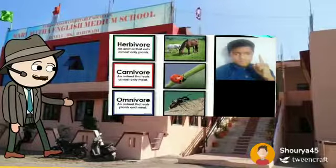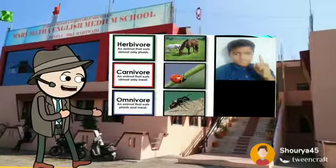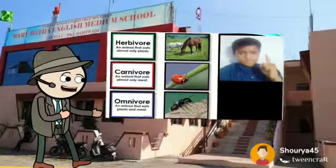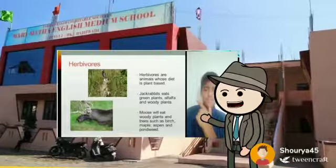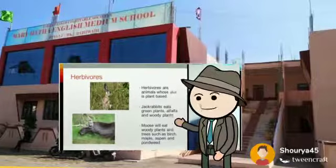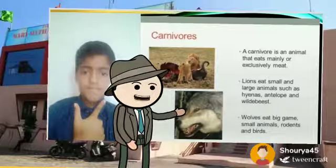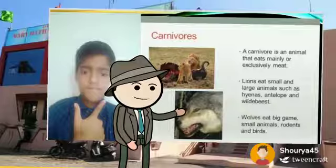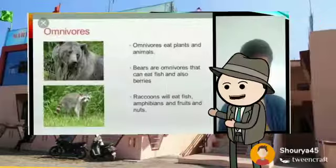Animals are divided into three types based on their eating habits. These three types are herbivore, carnivore, and omnivore. Herbivore animals are animals whose diet is plant-based. Some examples are jackrabbits and moose. Carnivore animals are animals whose diet is meat-based. Examples include lion.